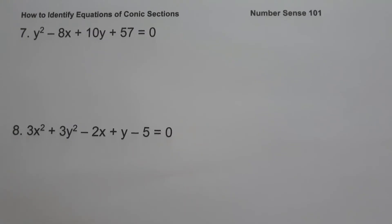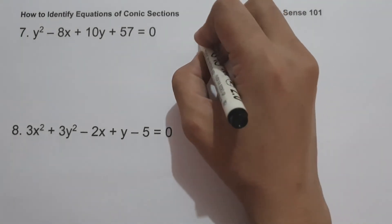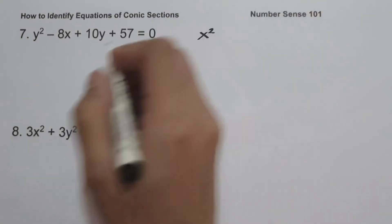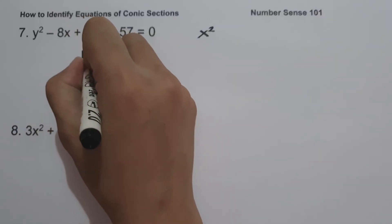On example number seven, we have y² − 8x + 10y + 57 = 0. Since we don't have x², we can say that this equation is a parabola.